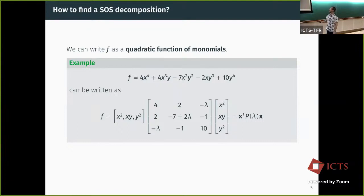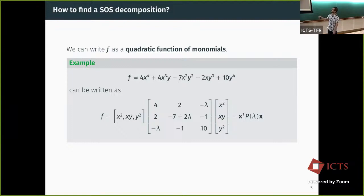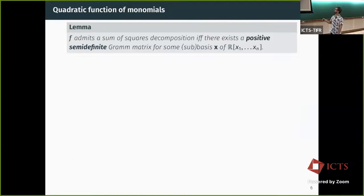Sometimes it is possible that if I have a polynomial, I can write it as a quadratic function of monomials. That means I have some basis consisting of monomials, and then there is a matrix inside, and then the same basis transposed. Most of the entries in this matrix will be zero, so I just pick the non-zero ones. I can write this polynomial as a quadratic form with a matrix associated to this basis. This matrix is called a Gram matrix.